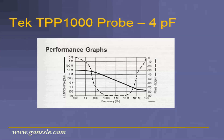Tektronix is one of the few companies that does a great job of characterizing the impedance of their probes. Here's a graph from one of their data sheets for their TPP-1000 probe — it's a 4 picofarad probe, and as you can see, sure enough, as the frequency goes up, the impedance goes down drastically. This is a $1,000 probe.